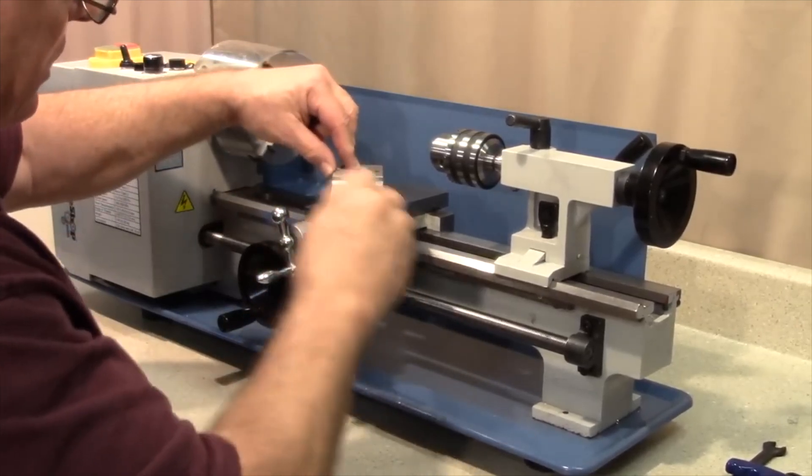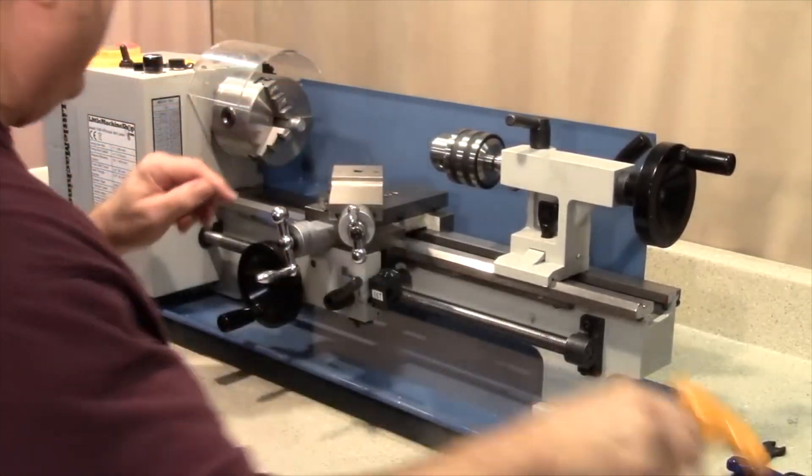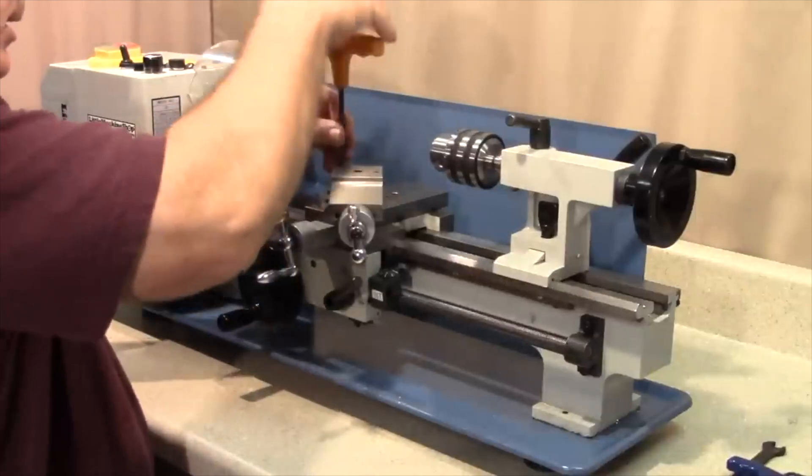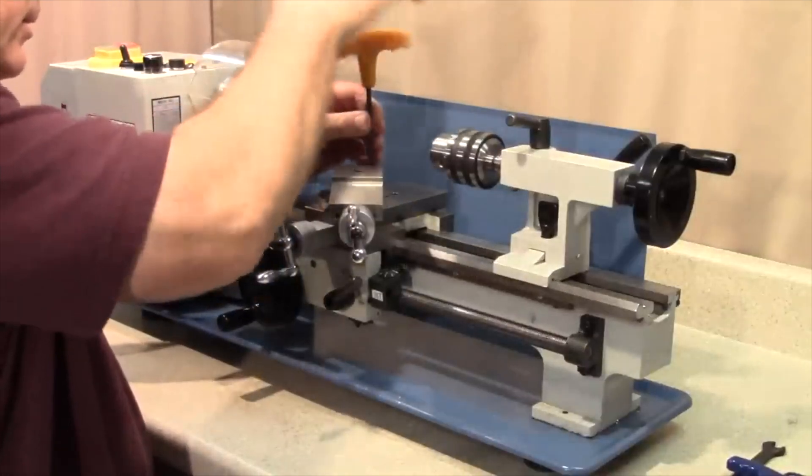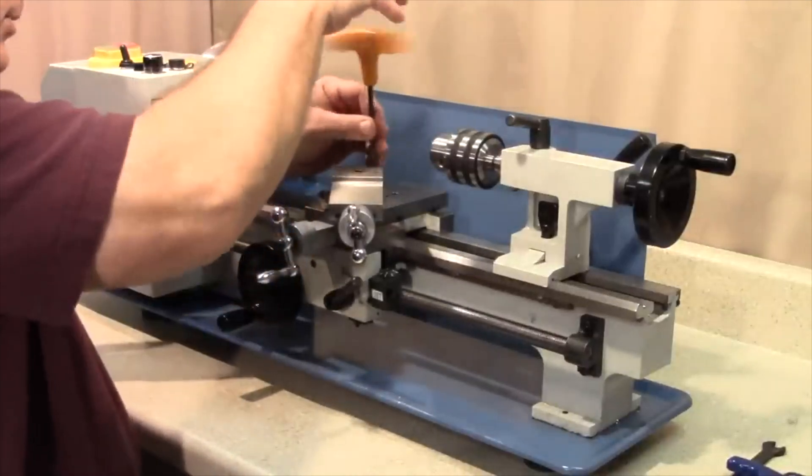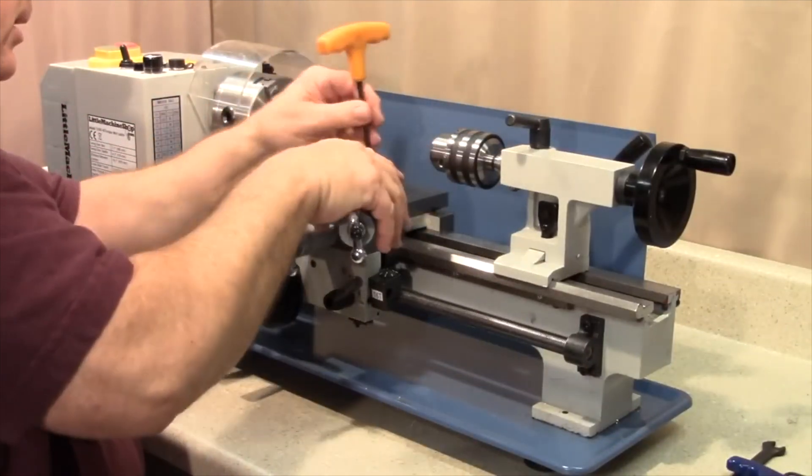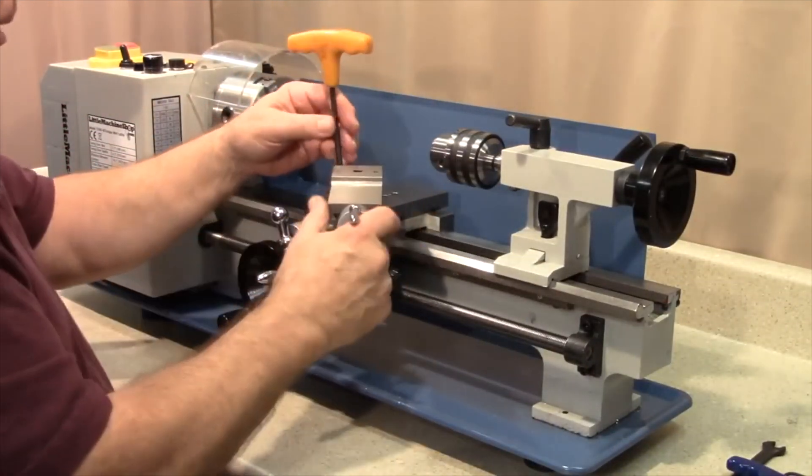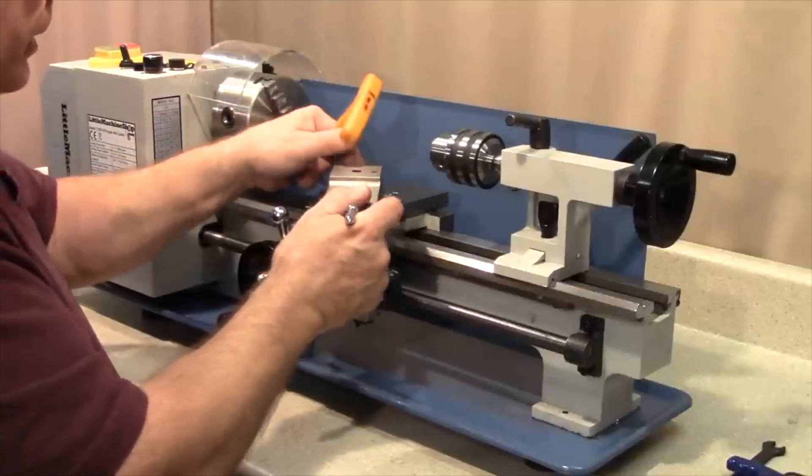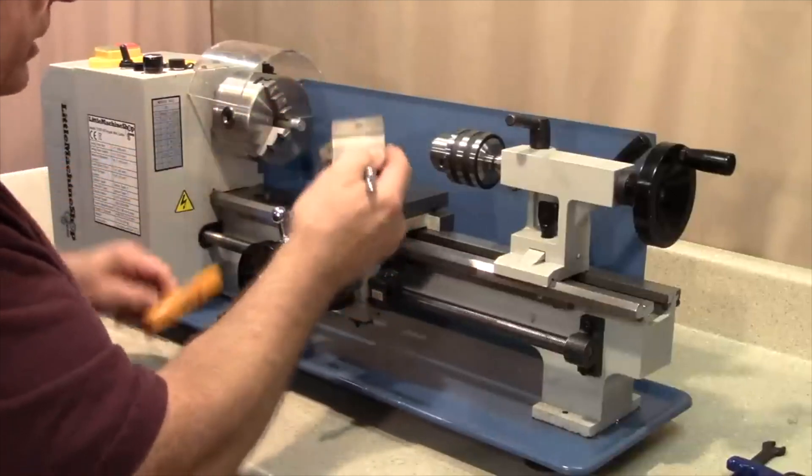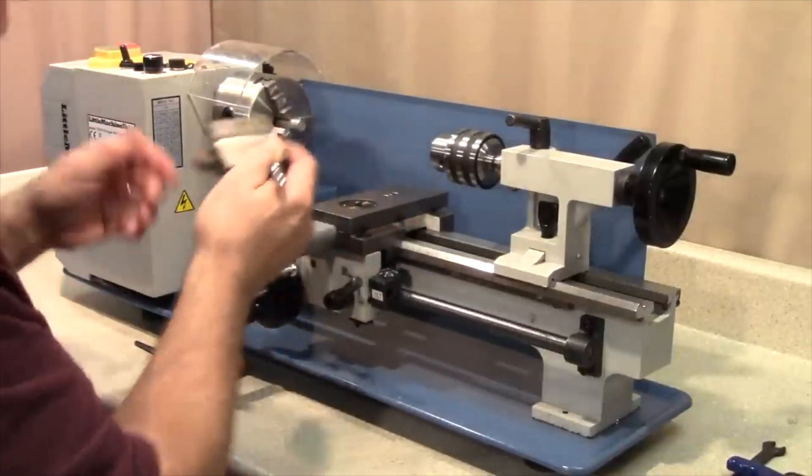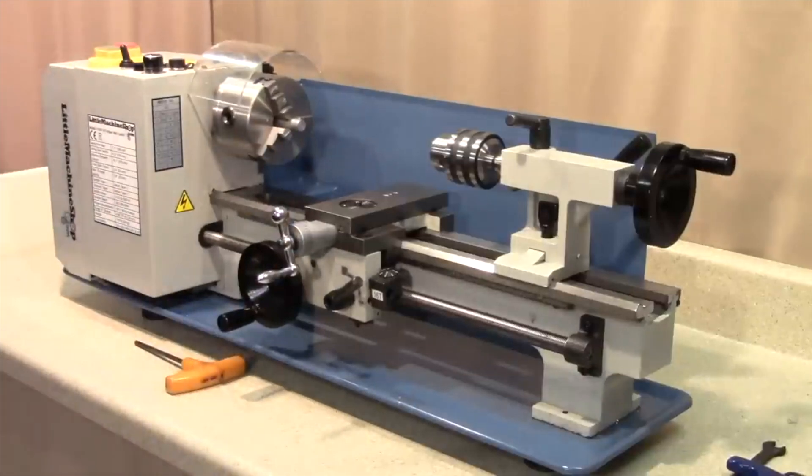Next I want to remove the compound. You have to crank the compound all the way back in order to gain access to these socket head cap screws that are hidden underneath here. You'll need a 5mm hex wrench to loosen those up, and keep your hand under here because it has a tendency to tilt and drop off when you least expect it.